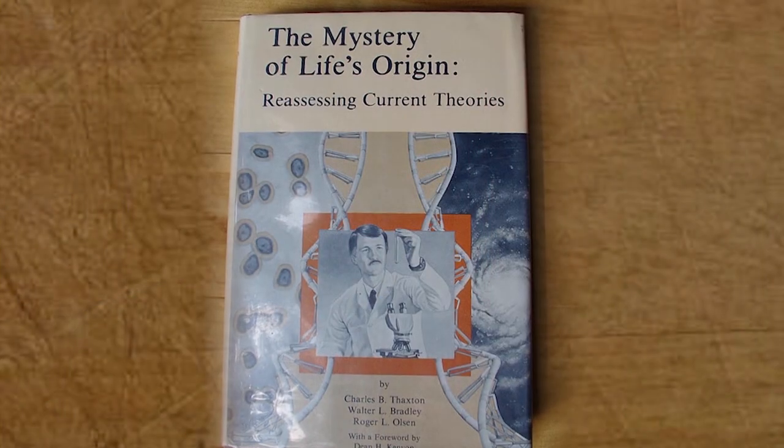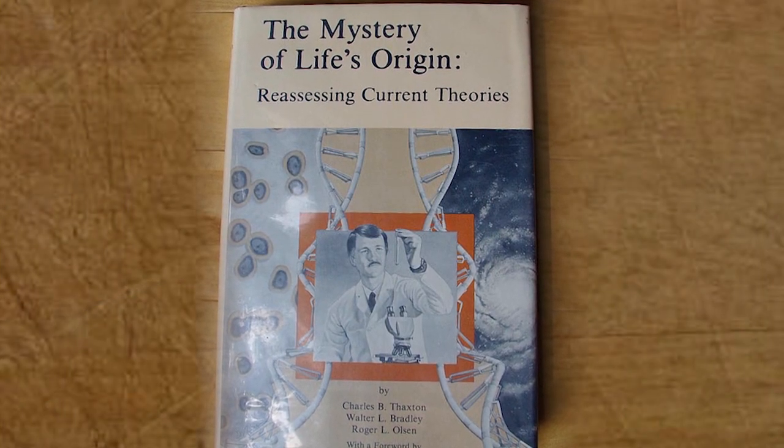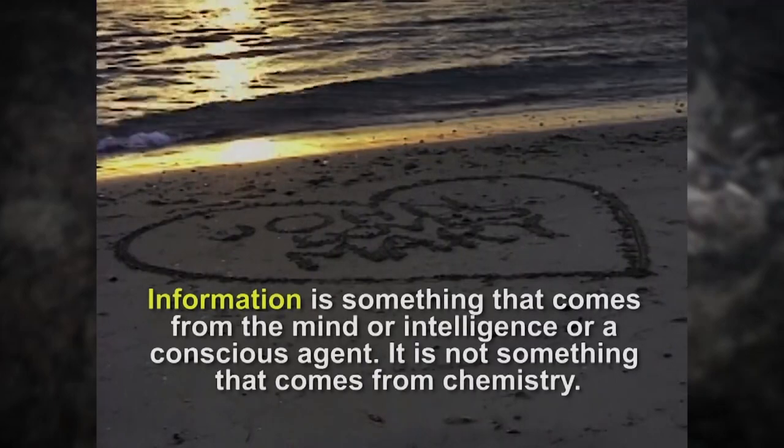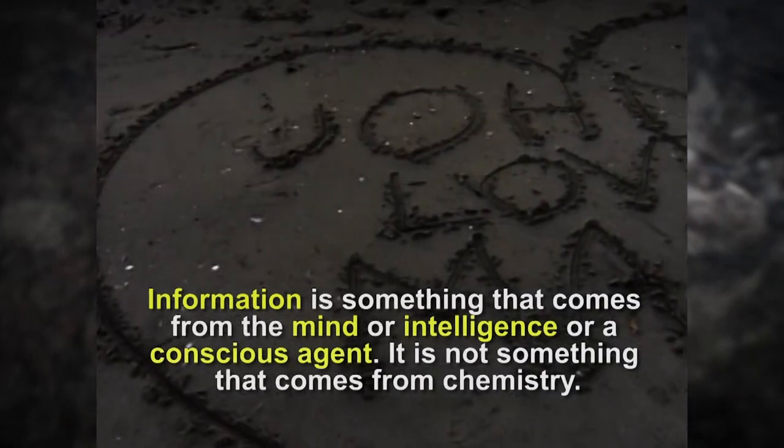I was fascinated with this and I ended up getting to know Thaxton — was introduced at the conference and started to visit with him after work. He had, in the epilogue to his book The Mystery of Life's Origin, floated an idea. He said that there was something about the information-bearing properties of DNA that suggested that perhaps we were looking at evidence of an intelligent cause. At the time, he didn't develop this into a full-blown theory, but it was more of an intuitive connection based on the understanding that information is a kind of mind product — it's the sort of thing that comes from a mind, or an intelligence, or a conscious agent. It's not something that comes from chemistry.